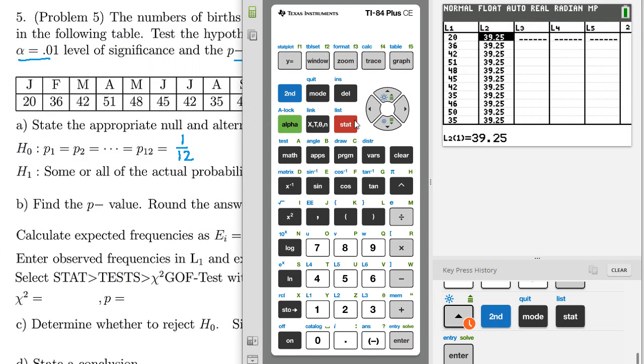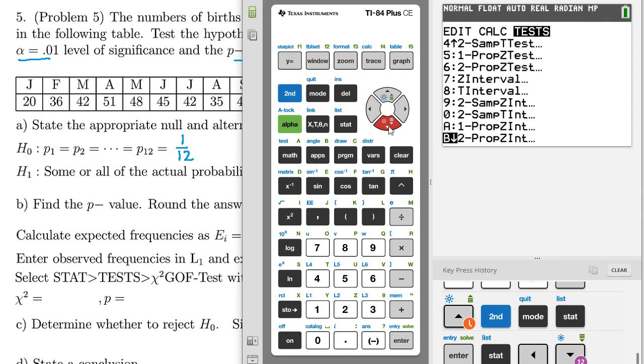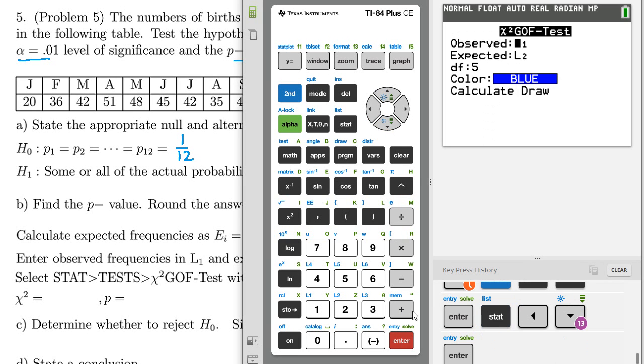So stat, tests, and then scroll down to goodness of fit, which is letter D. Enter. We can see list 1, list 2, need to change our degrees of freedom to 11. Come down to calculate and enter.